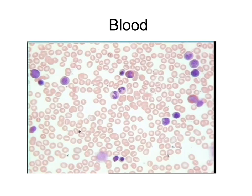The remaining 3% will be the various dissolved substances, such as gases, nutrients, antibodies, and hormones. The formed elements are going to be the cells and the cell fragments, and it will be these formed elements that we will be identifying on our future slides.